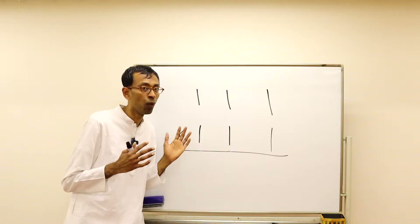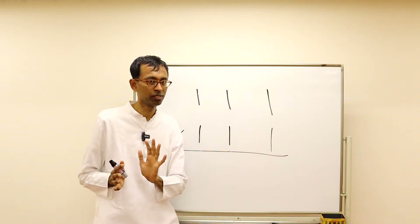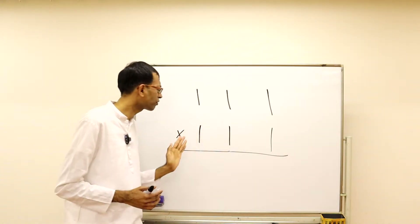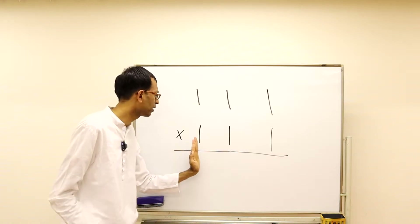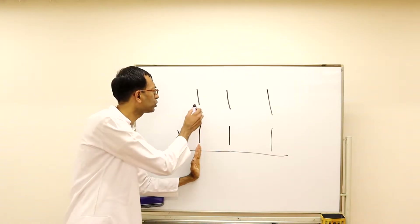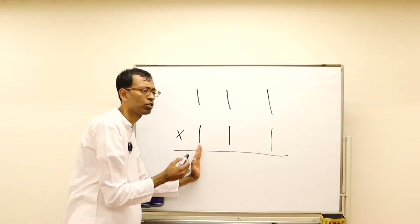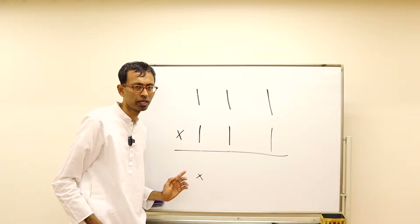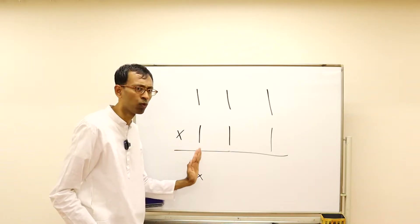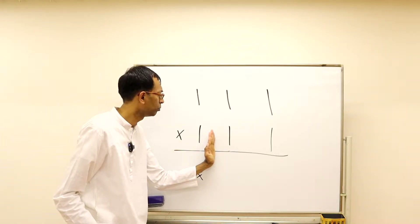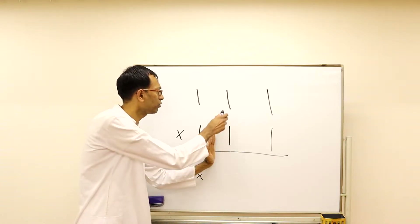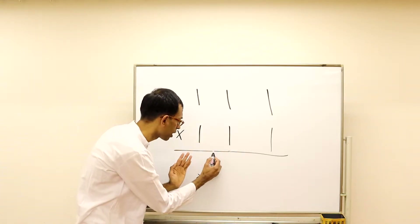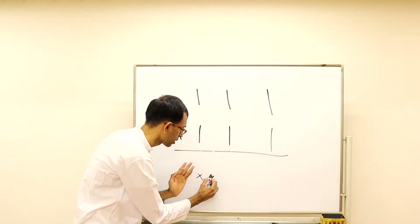I will tell you what those five calculations are. You can start from left or from right. First, we simply multiply the two leftmost digits and write down the answer. Then we shift our center to between those two digits and do a crosswise multiplication and write down the answer.